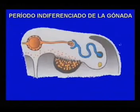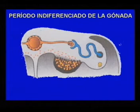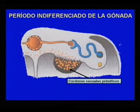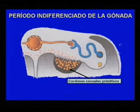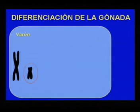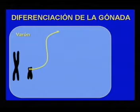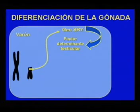Antes de la llegada de las células germinativas primordiales y durante su arribo a la gónada, el epitelio celómico prolifera y sus células se introducen en el mesénquima subyacente formando cordones celulares conocidos como cordones sexuales primitivos. En esta etapa, la gónada tiene las mismas características en uno y otro sexo y se conoce como gónada indiferenciada. El cromosoma Y es quien determina el dimorfismo sexual.